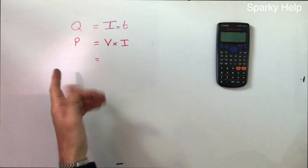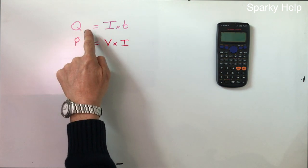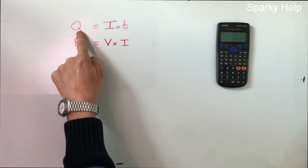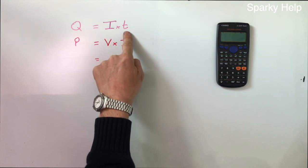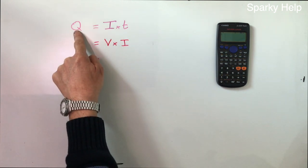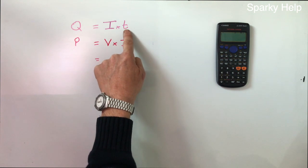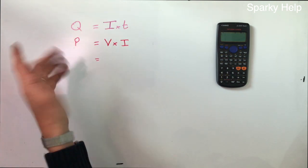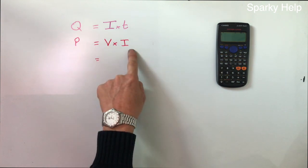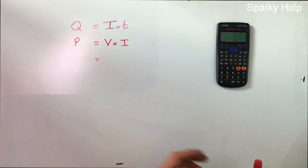So energy. We started off originally with coulombs, which is Q, which equals I times T. So current times time in seconds will give you coulombs. Current times time in hours will give you ampere hours, which you might find batteries are rated in. Power is V times I, which we already know about.